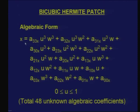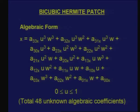The algebraic form represents x using coefficients denoted a with two indices representing the powers of u and w. Similarly for y. So how many algebraic coefficients are needed to completely define a bicubic Hermite patch? Sixteen for x, times three for x, y, z — a total of 48 unknown algebraic coefficients. The parameters u and w both range between 0 and 1.